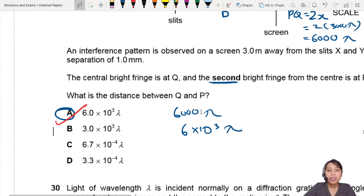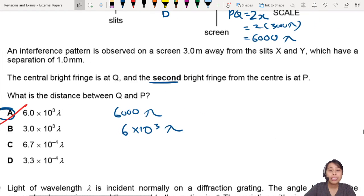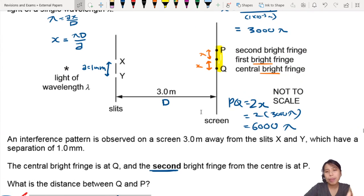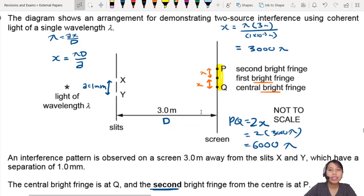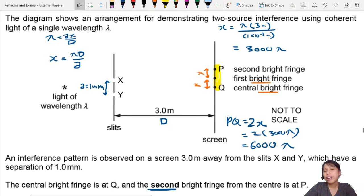So be careful, they are not asking for fringe separation, they're asking for distance between PQ. If you got trapped in that, make some notes on your paper so you don't keep doing the same mistake. Read the question carefully. That's all for this question, I will see you in the next one.